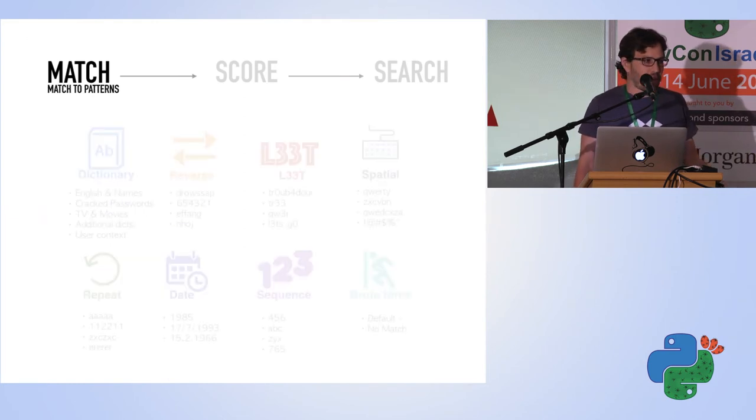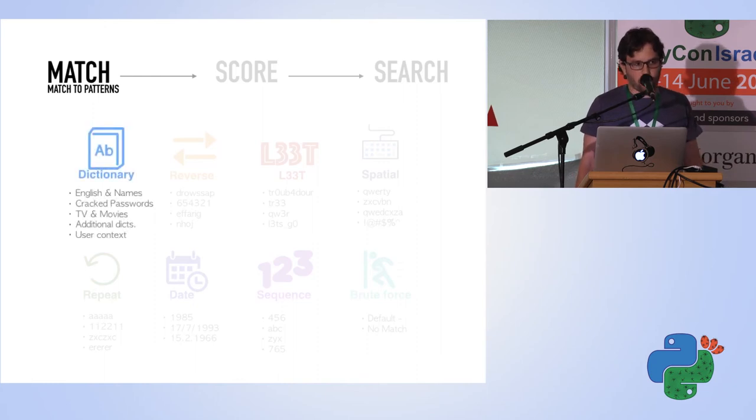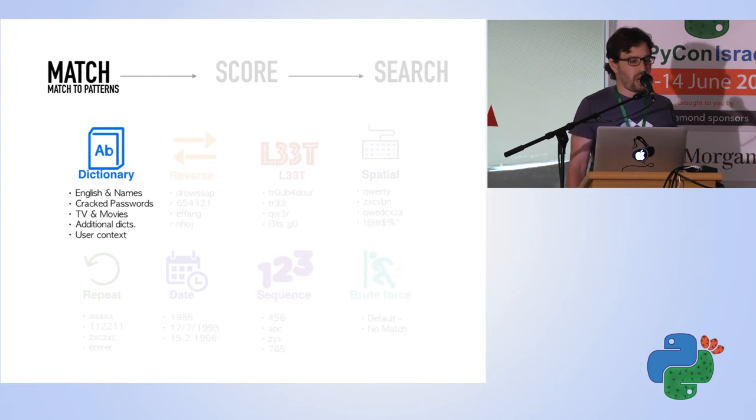Then we try to match it with one of eight matchers. What are the matchers? The first matcher is dictionary. We try to match our password with the dictionary. We have a few dictionaries like English, names, cracked passwords, TV, movies, and many more.